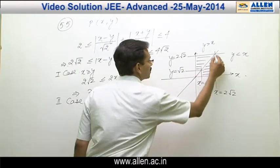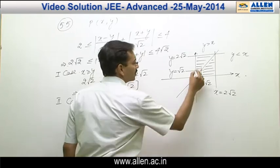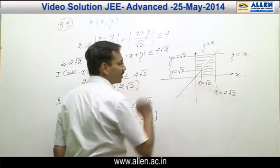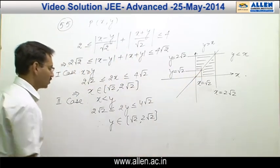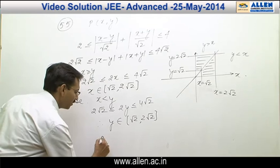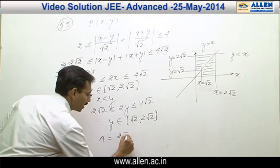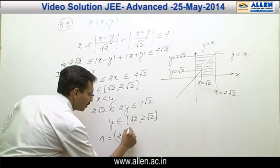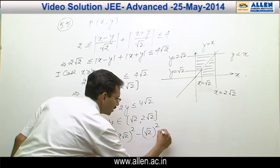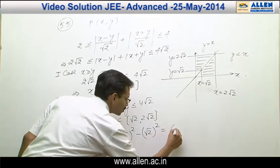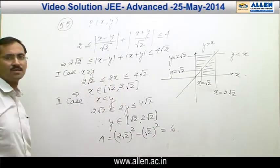This is a square of side length 2 root 2 and this is also a square of side length root 2. So the required area is (2 root 2) squared minus (root 2) squared, which is 8 minus 2 equals 6. So 6 is the answer.